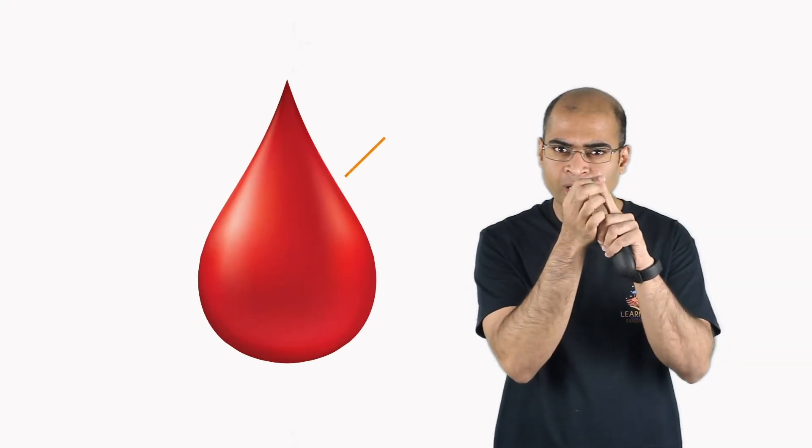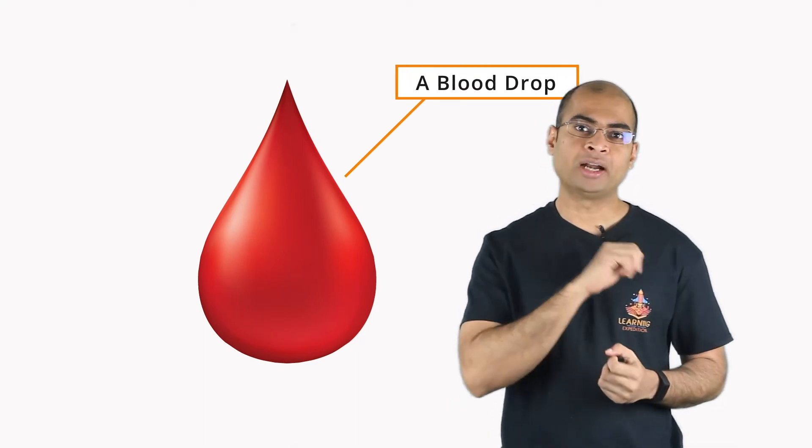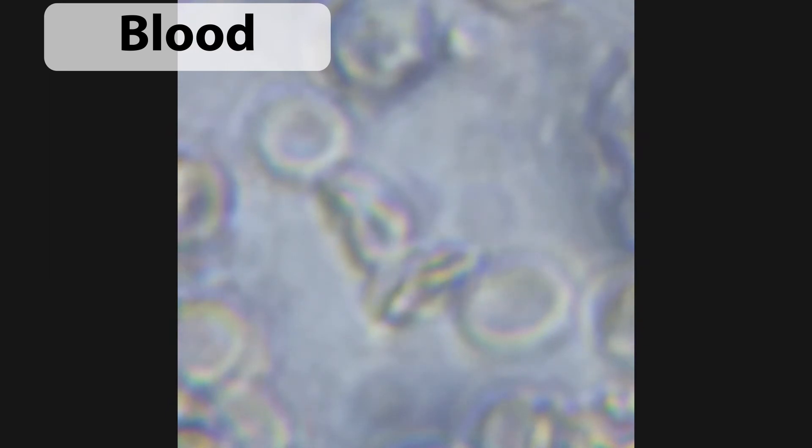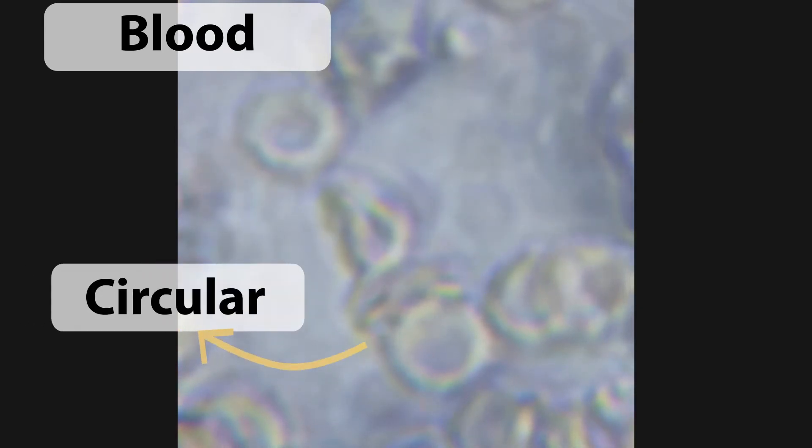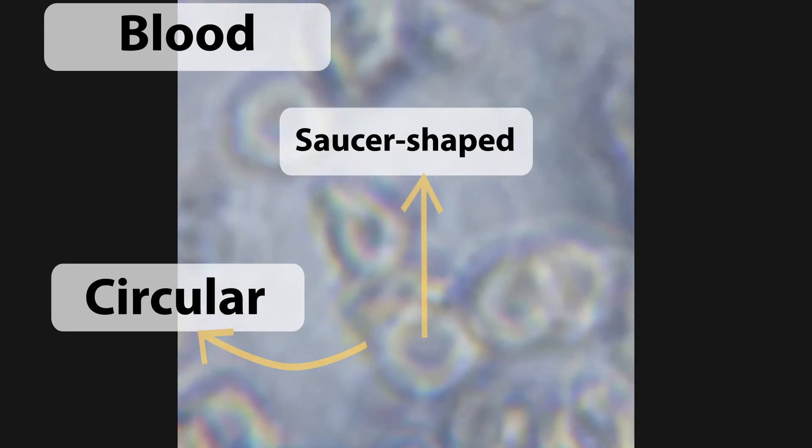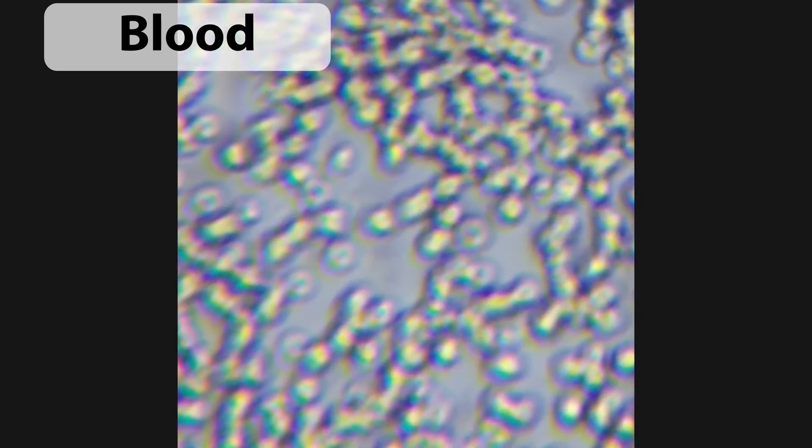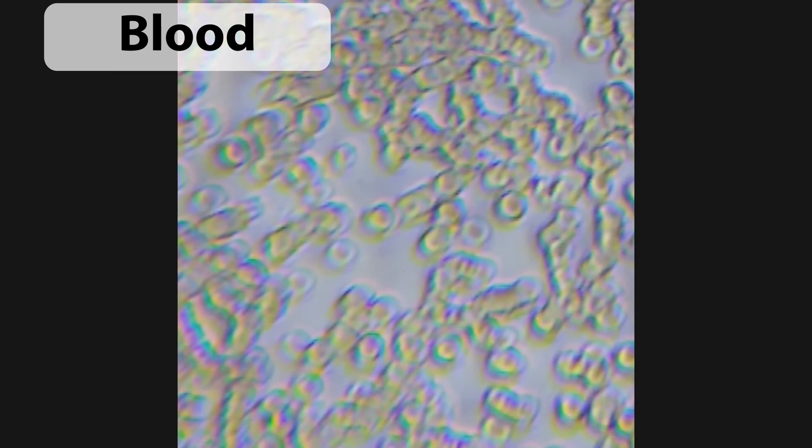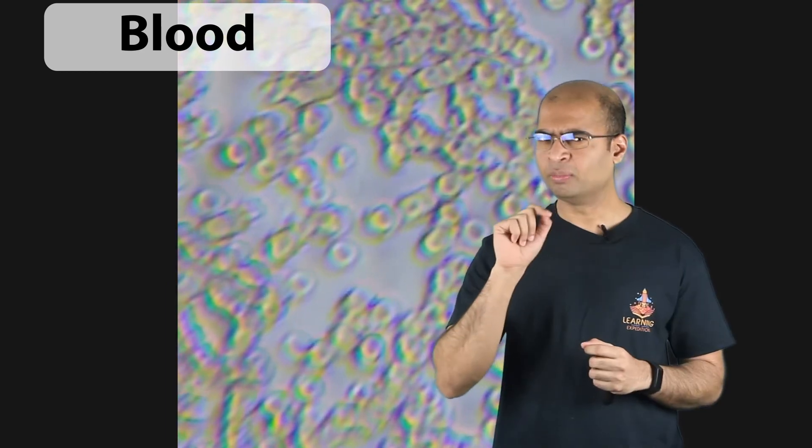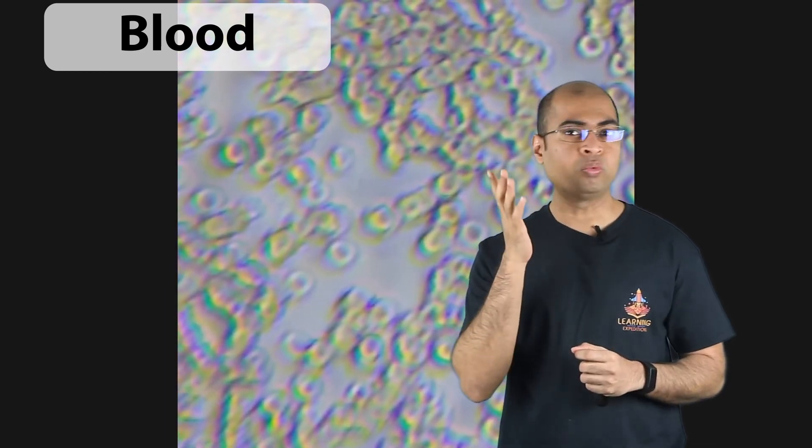Let's take a drop of blood and observe that under the microscope. What we see here is the image of blood zoomed in again about 200-300 times. Notice how these are more circular and shaped like a saucer, with kind of a dent in the middle. And they are not very closely packed together, unlike the boxy nature of the onion peel that we saw. Just take a moment and think of why that could be.